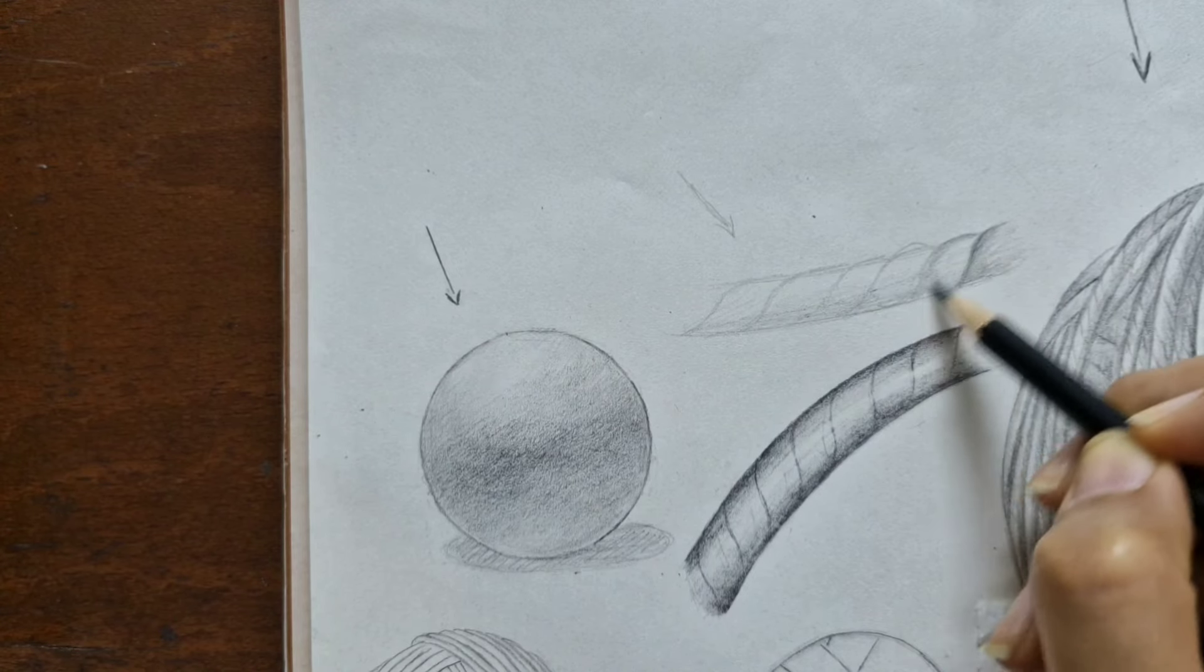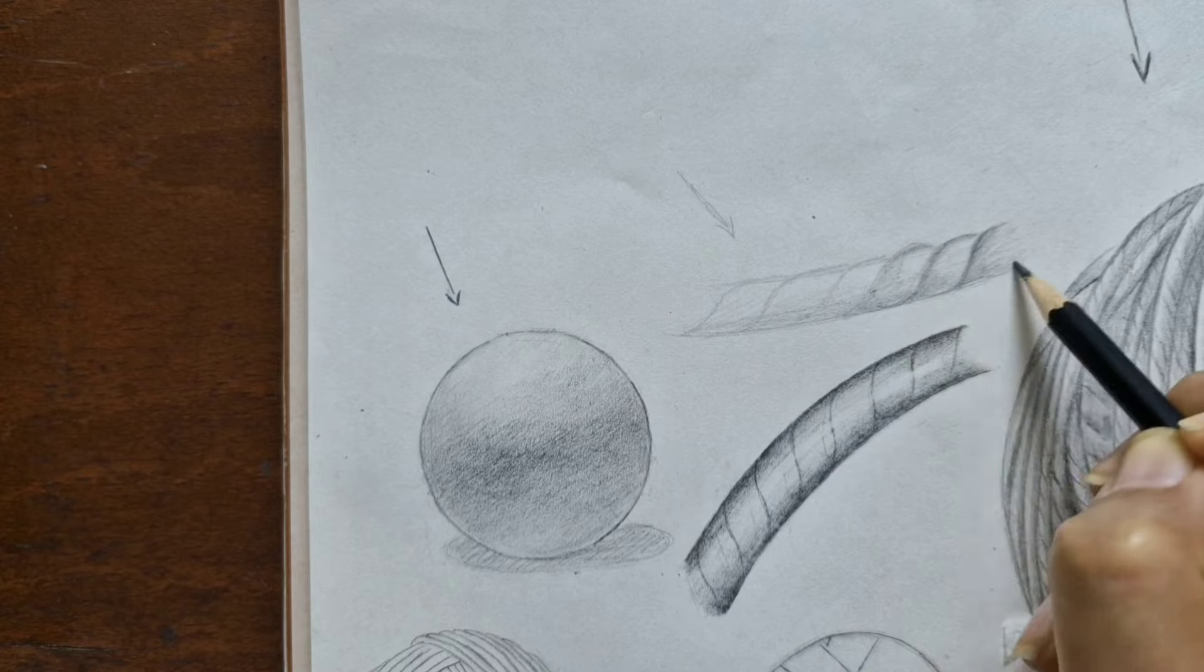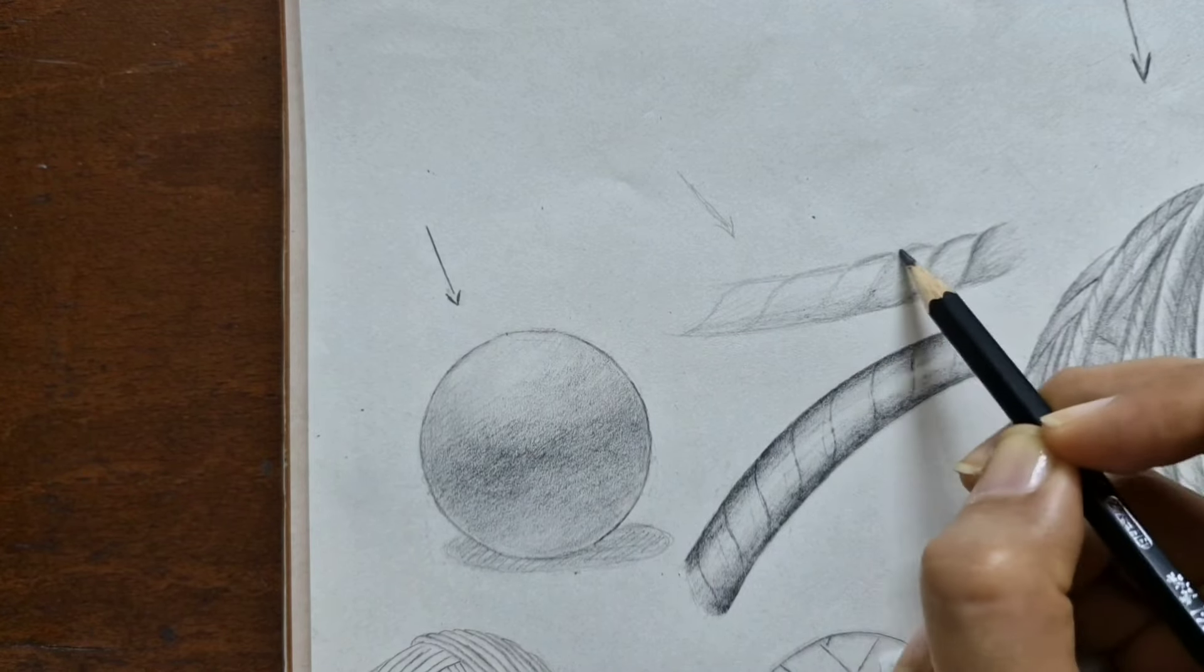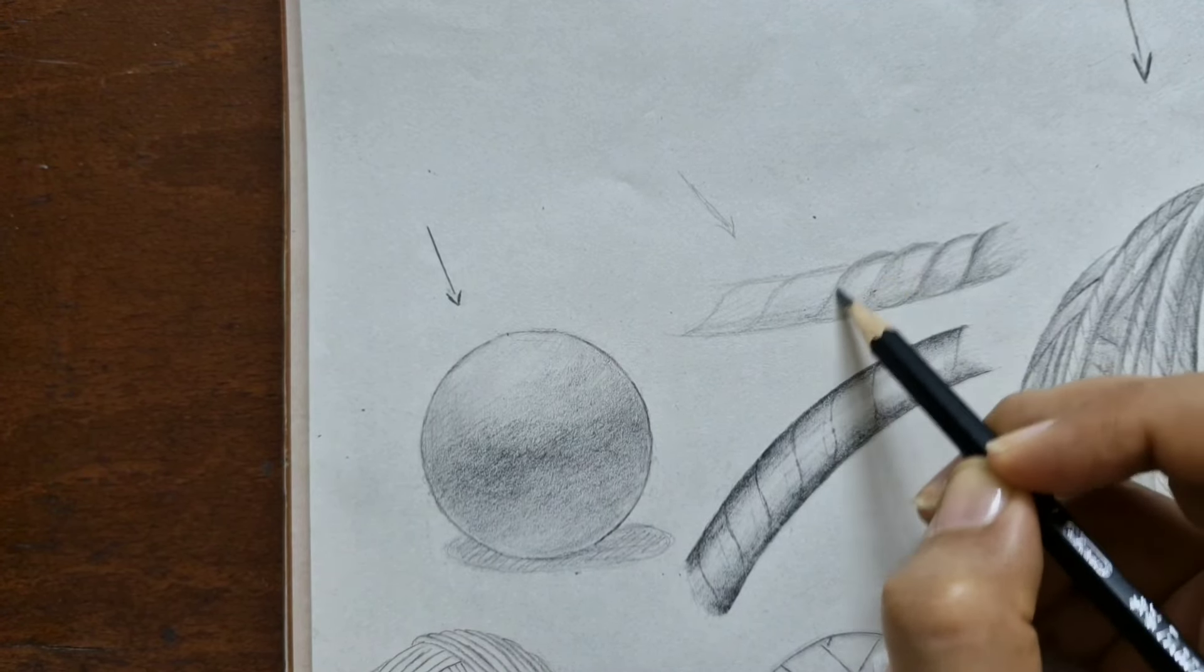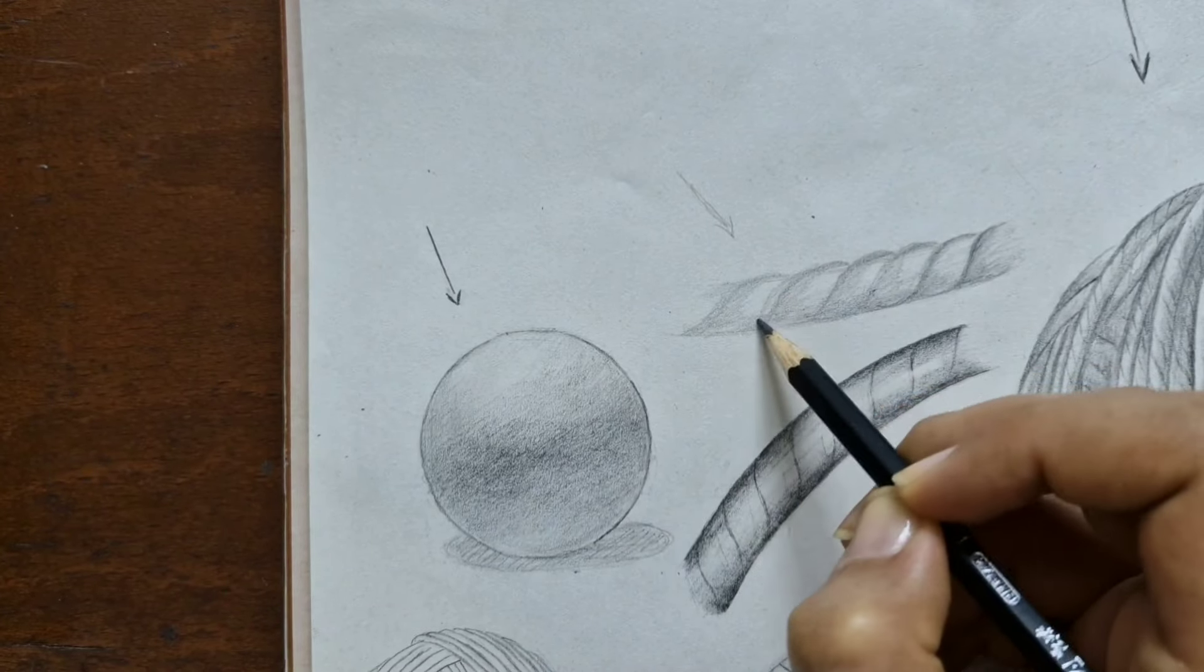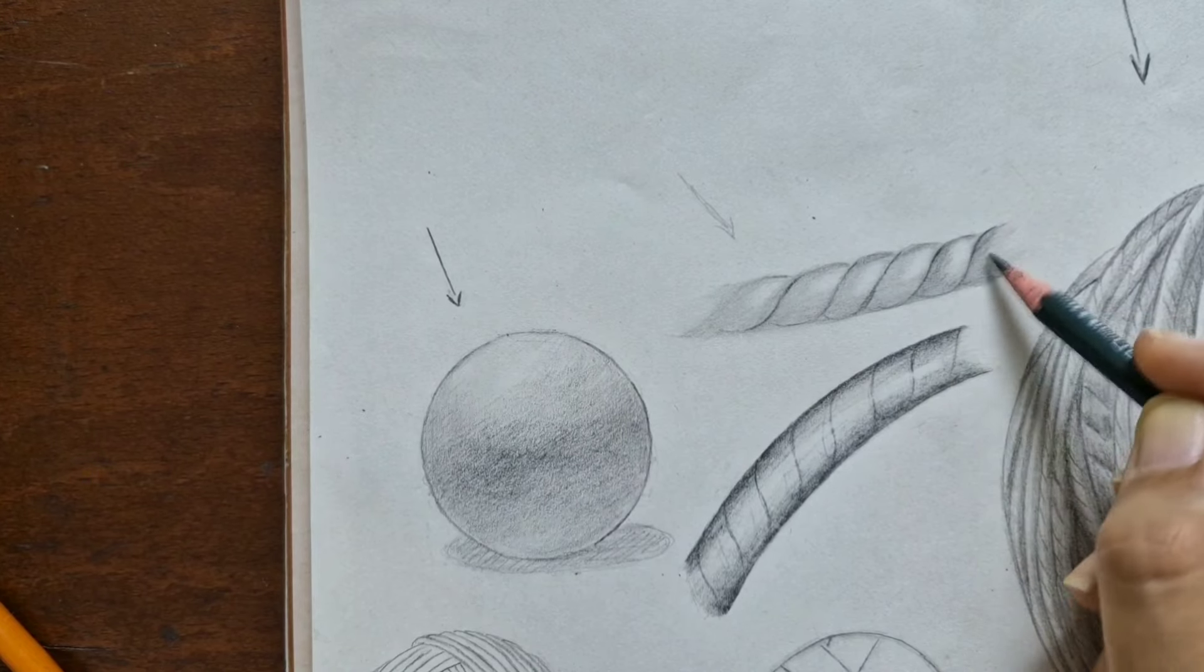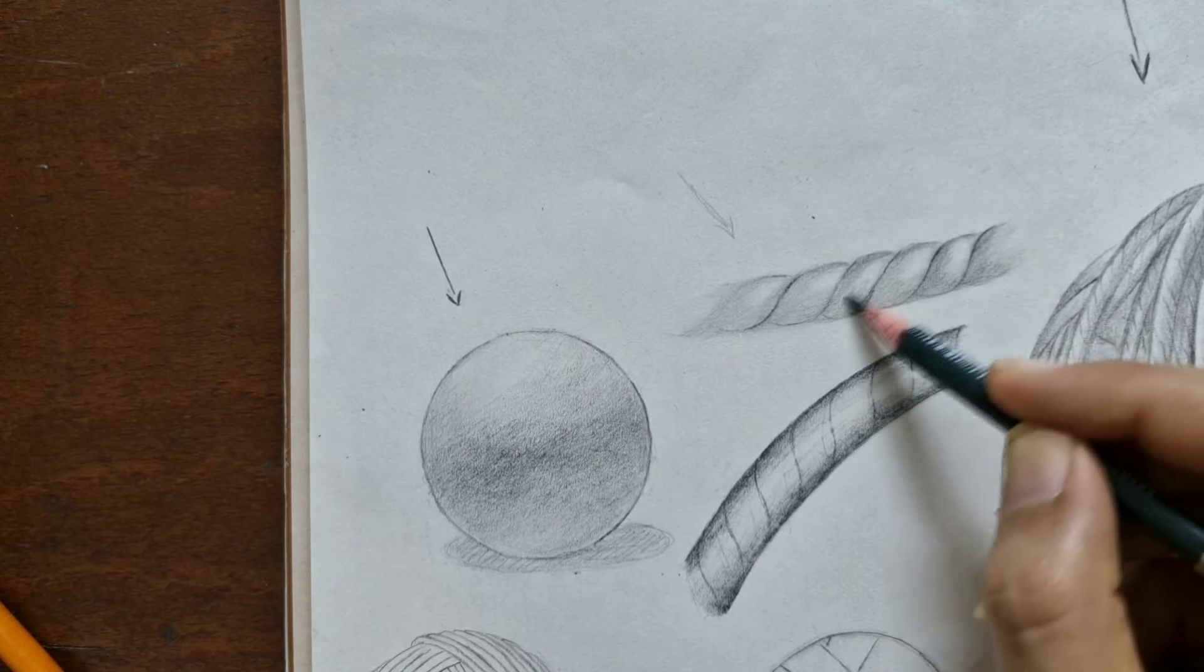The twisting gaps between each curve will naturally be darker because less light reaches them. These areas are a bit deeper so we'll make them darker. Don't make the strokes too dark on the edges. Focus on making the middle of the curves darker. Let the edges soften out. Darkening the edges creates an unnatural effect.